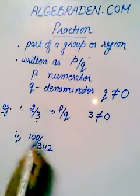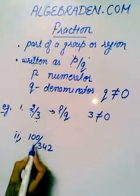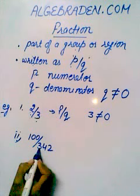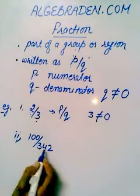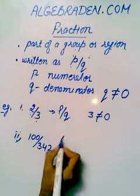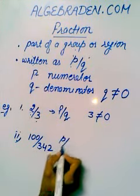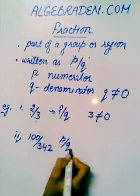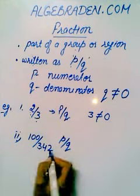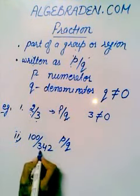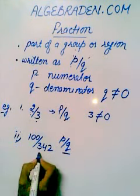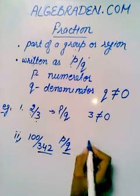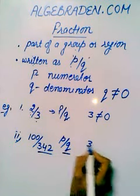In another example, 100 divided by 342 is also a fraction as it is written in the form of P over Q and Q is not equal to 0.